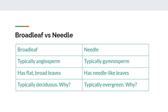Most broadleafs are deciduous, and it becomes clearer when you think about conditions during the winter. There is less moisture in the air, the temperature is lower, and snow is falling. Rather than use up more resources to keep the leaves alive in these harmful conditions, trees simply shed their leaves until the weather becomes favorable again. Additionally, the broader leaves tend to accumulate large amounts of snow, which could weigh down branches and potentially cause breakage, harming the tree. Trees with needles are typically evergreen — the needle-like leaves have a smaller surface area, so less snow will accumulate, and they are more resilient to harsh winter weather.